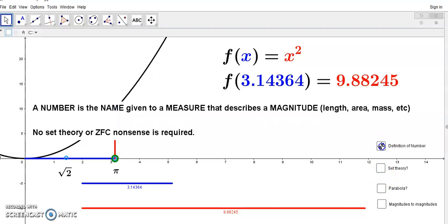Now, remember, the definition of a number is that a number, by the way, is a noun. And what are nouns? Think about what are nouns. Nouns are names. Right. So, a number is a name given to a measure that describes a magnitude, which can be anything from length, area, mass, whatever. It doesn't really matter what the magnitude is. If it has a measure, then we give that measure a name and we call it a number.